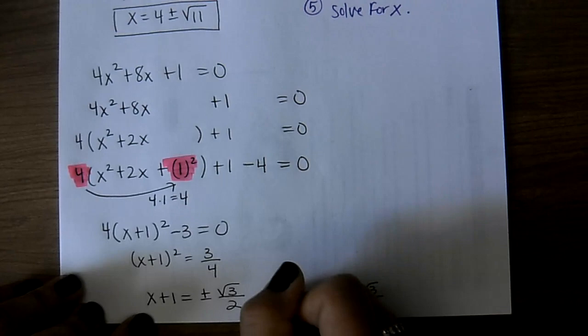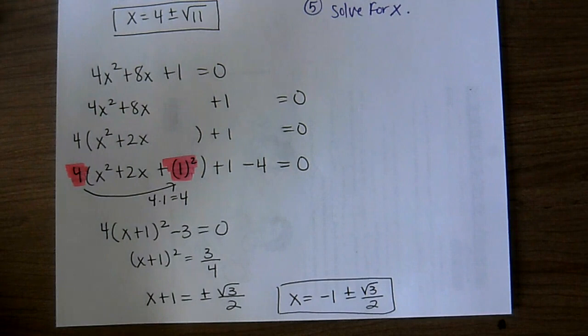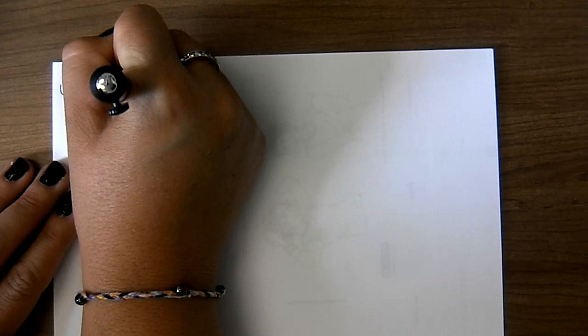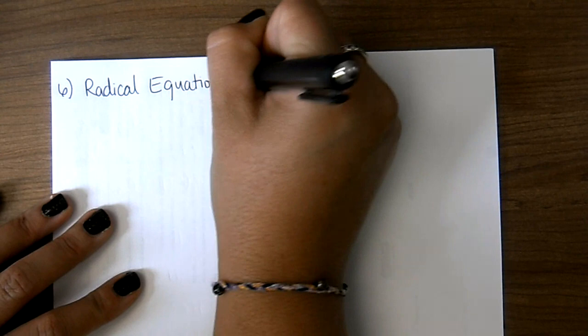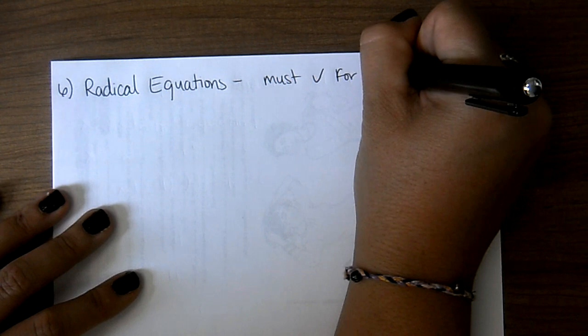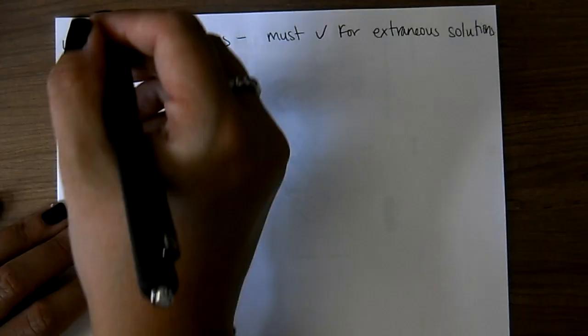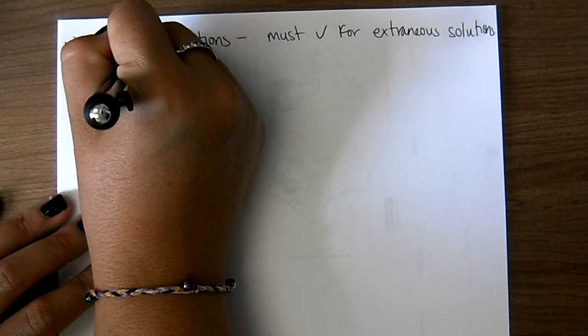Completing the square is going to take a lot of work, but you'll keep working at it until you're good at it. The next and last type of equation we're going to talk about is a radical equation — this is the sixth type. These are called radical equations because they have square roots. The important thing is that you must check for extraneous solutions.